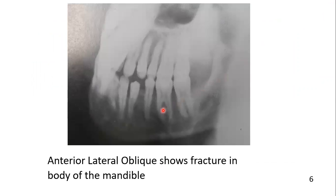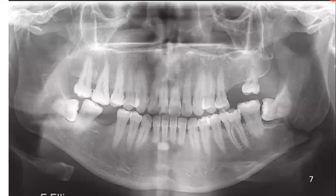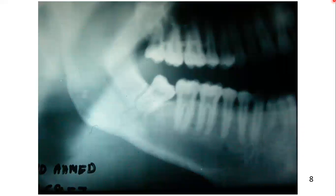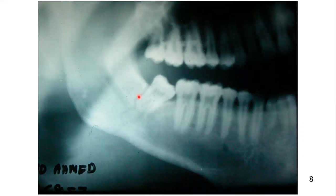Another view of the interior lateral oblique showing fracture of the body of the mandible. OPG showing angle fracture — you can easily appreciate another view showing the angle fracture. Here you can see multiple lines of fracture, indicating a complex or segmental fracture.